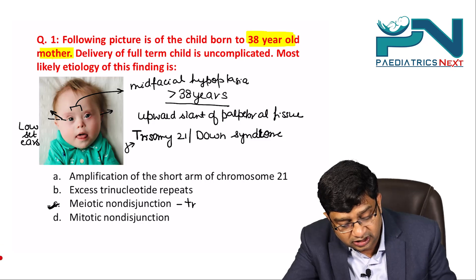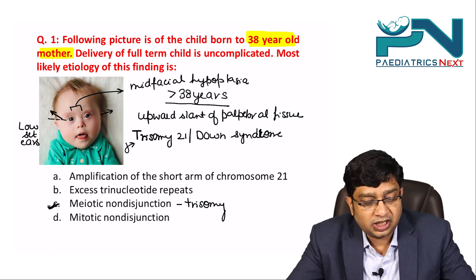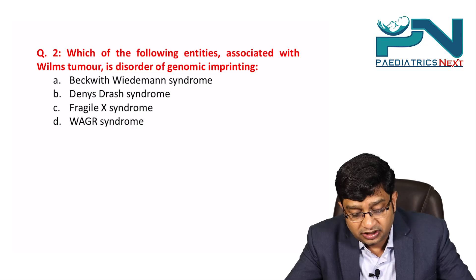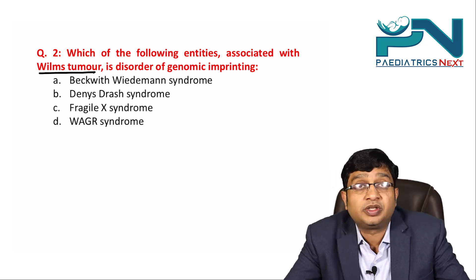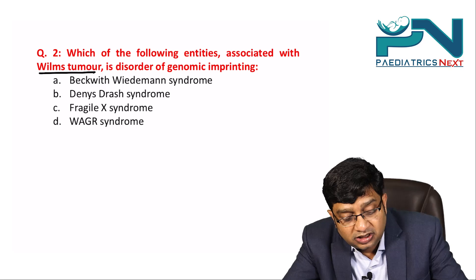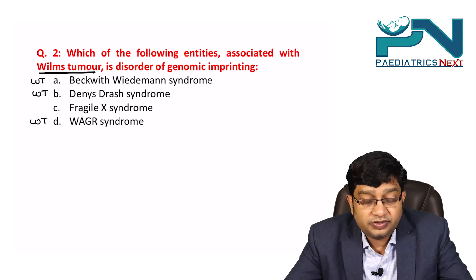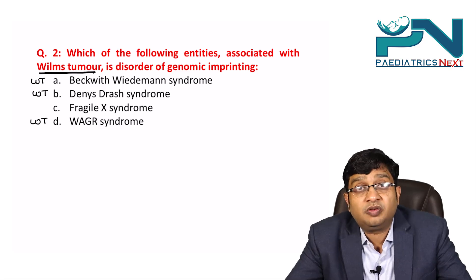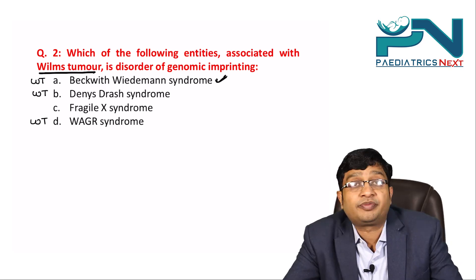Meiotic non-disjunction has resulted in the trisomy. Moving to question two: which of the following entities associated with Wilms tumor is a disorder of genomic imprinting? Wilms tumor can be seen in Beckwith-Wiedemann syndrome, Denys-Drash syndrome, and WAGR syndrome. Out of these, the answer is Beckwith-Wiedemann syndrome.